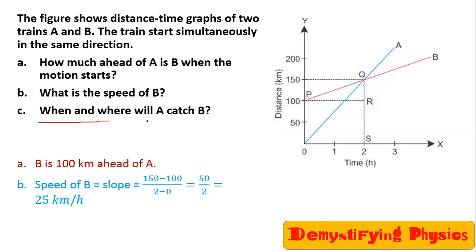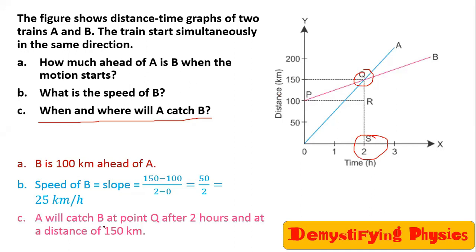Next, when and where will A catch B? Look at the point where the two lines intersect — that is where the trains meet. So at 2 hours and at 150 kilometres, both trains are meeting. A will catch B after 2 hours at a distance of 150 kilometres.